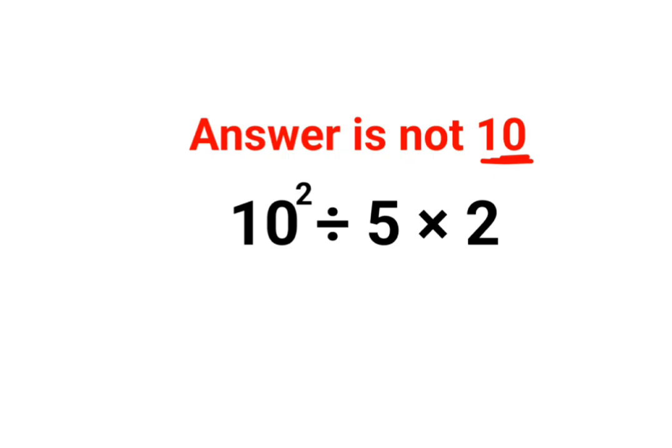A lot of people thought that this is so easy. This 10 square can be written as 100 divided by 5 multiplied by 2 that is 10. So answer comes out to be 10.